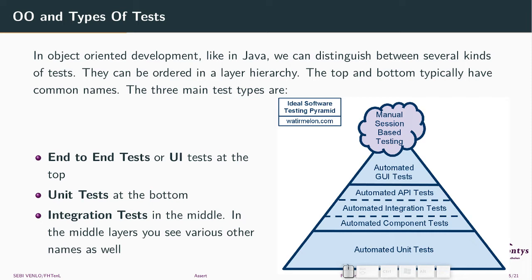Sometimes you have a few classes — one, two, or three — that work together, and you might move to the next level: component testing, where you combine things. Then integration testing, putting more parts together until you have the full application. At the top of the pyramid you might do automated GUI tests. At the bottom, tests are cheap — they run in milliseconds — but as you go up they take more time and are more expensive to run and to write.